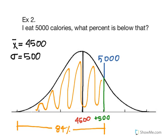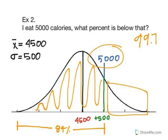To find the percentile below 5,000, you subtract the two percentiles above it. So you do 99.7.